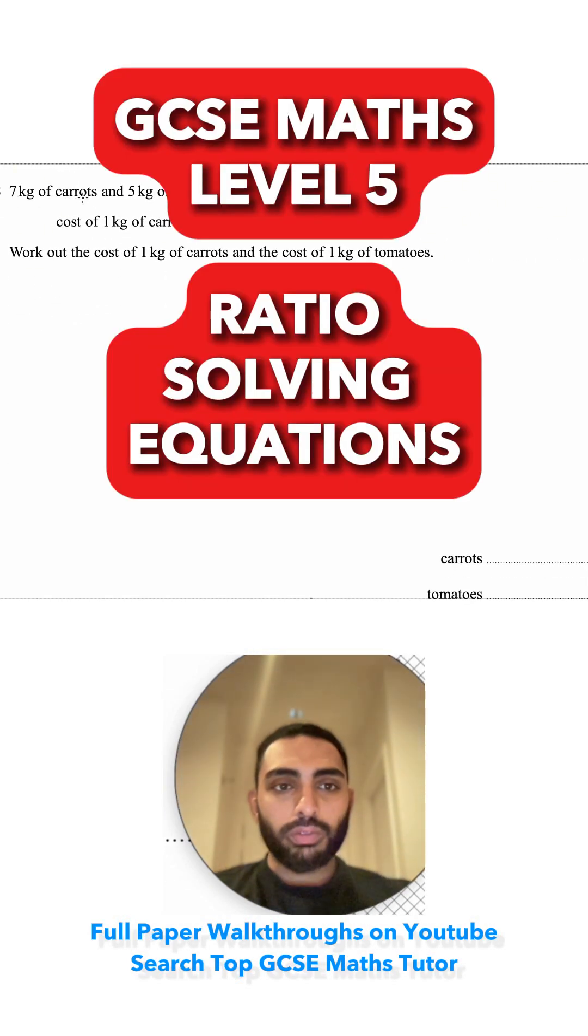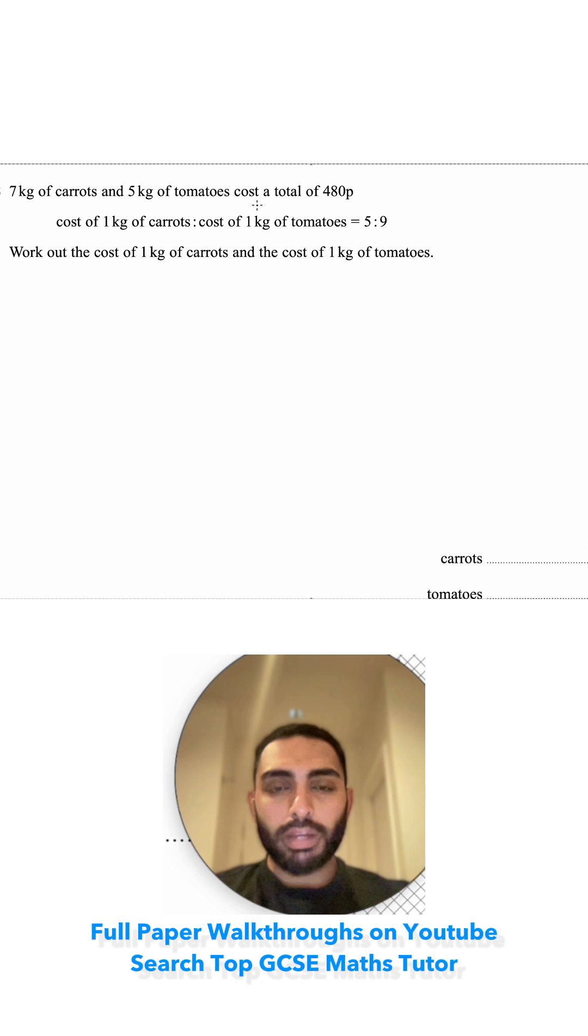Question 17. 7 kilos of carrots and 5 kilos of tomatoes cost a total of 480p. Let's translate this into an equation. I've got 7 lots of the carrots plus 5 lots of the tomatoes is equal to 480p.